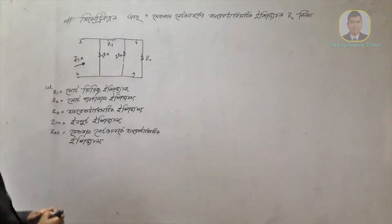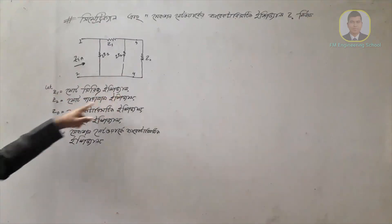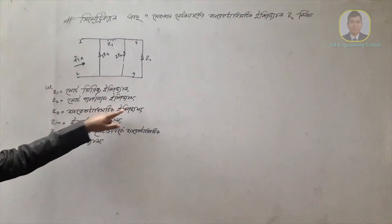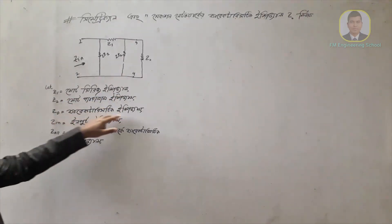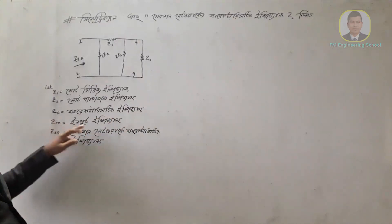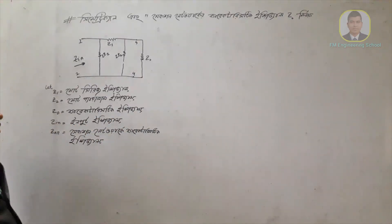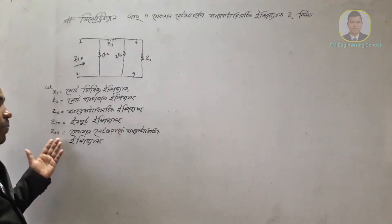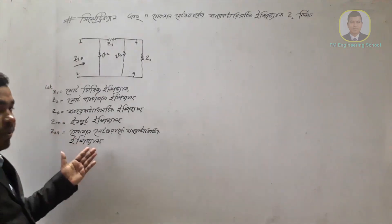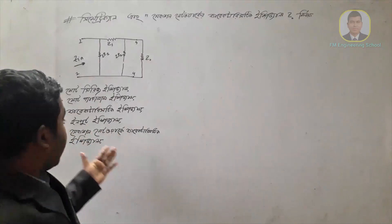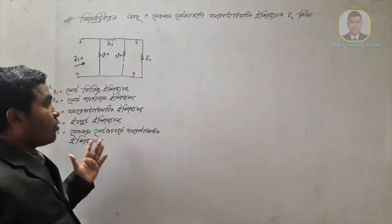So Z1 is the series impedance, Z2 is the parallel impedance, and Z0 is the characteristic impedance. Z0 is the pi-section network characteristic impedance.